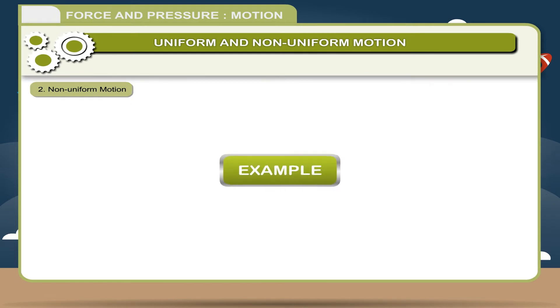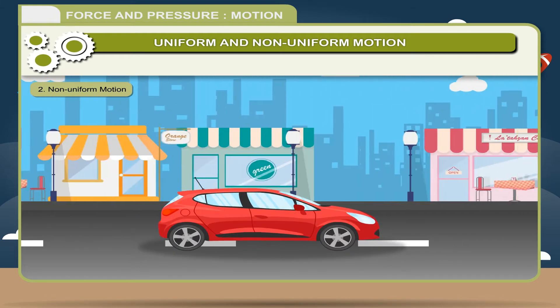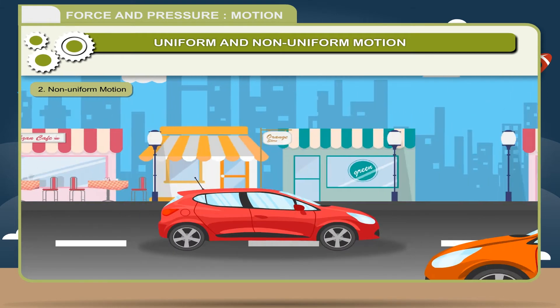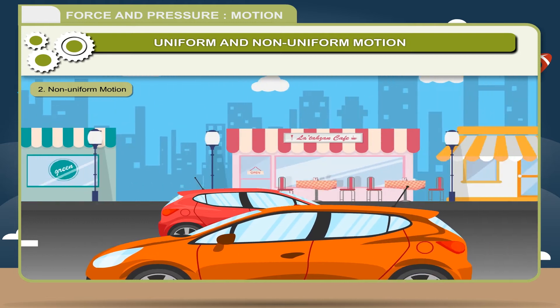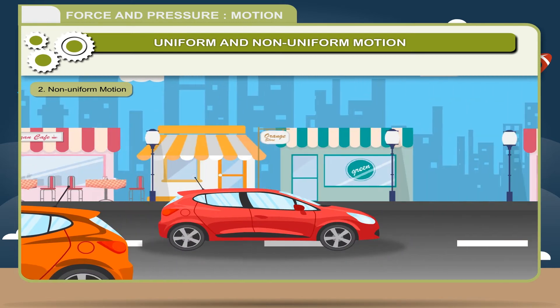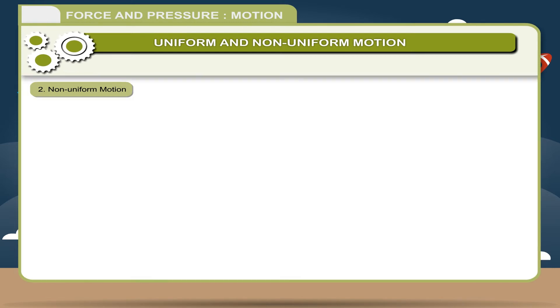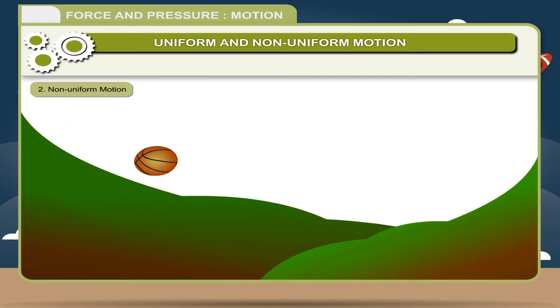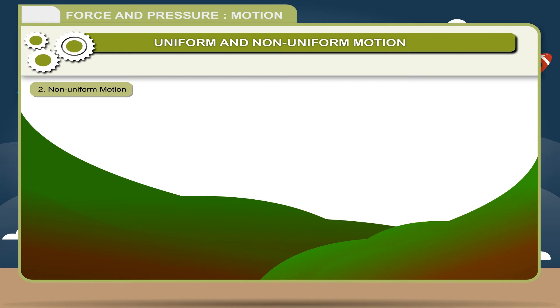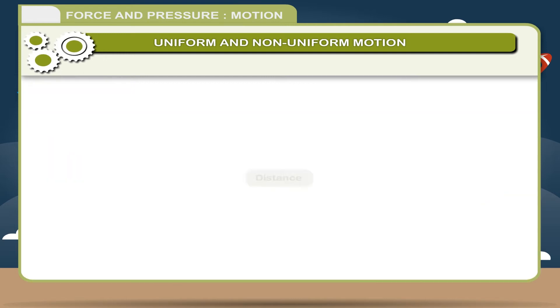Examples of non-uniform motion: the motion of a car moving on a busy road, and the motion of a freely falling body is also an example of non-uniform motion.